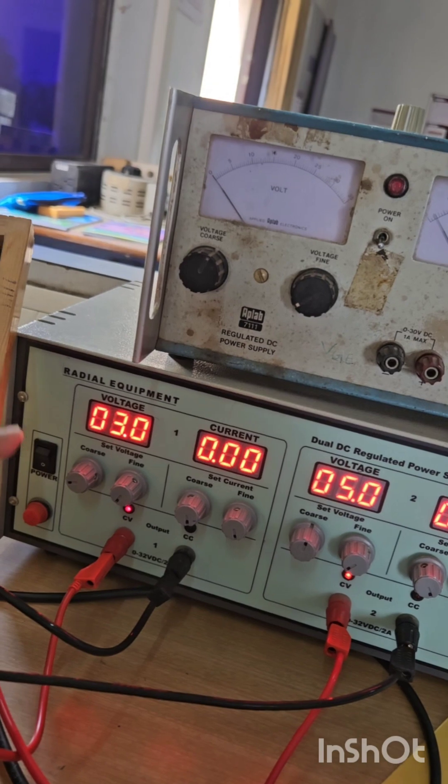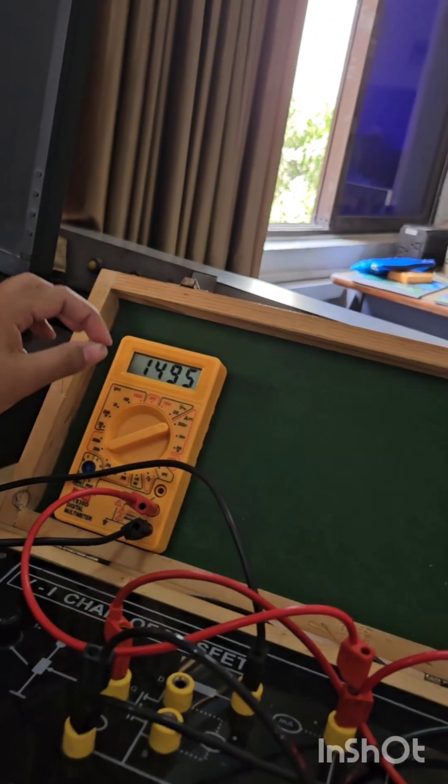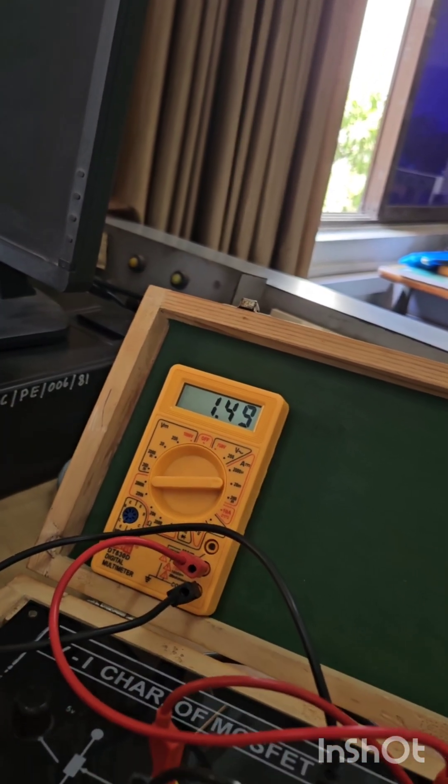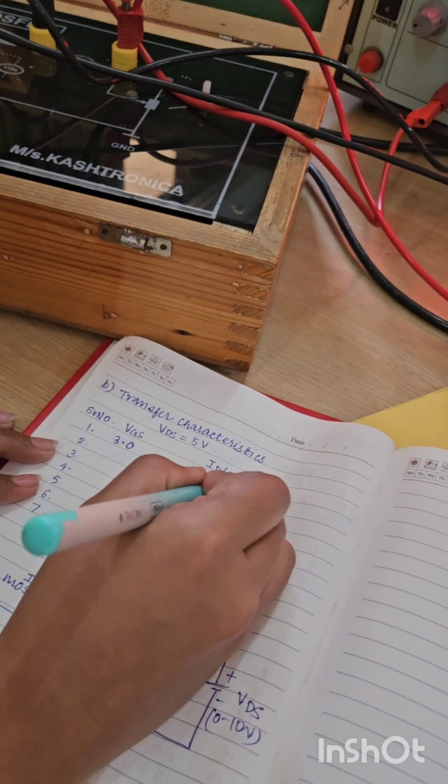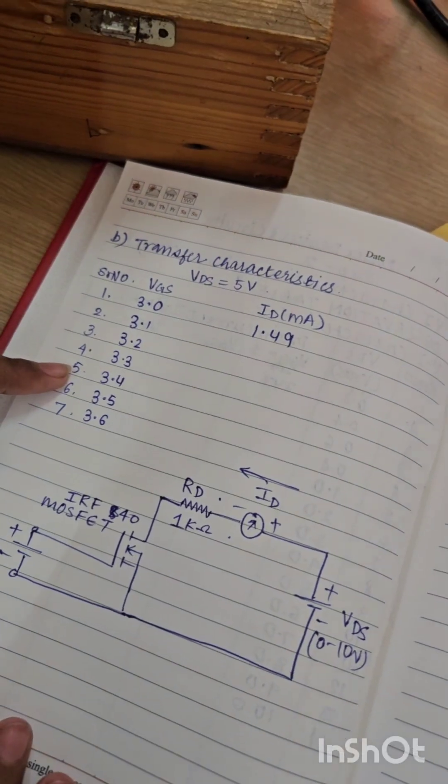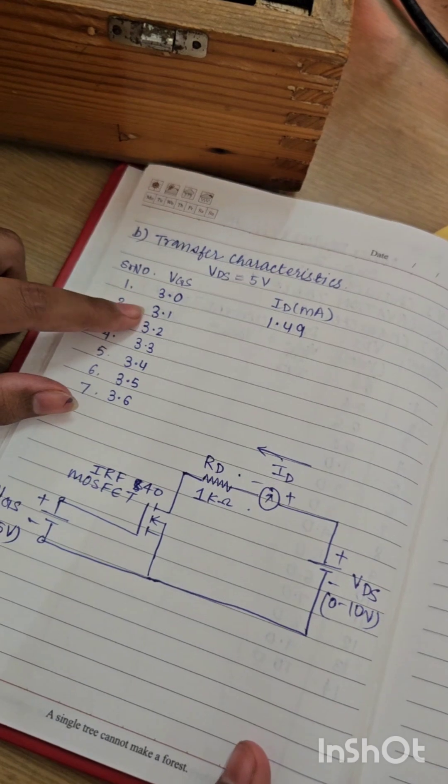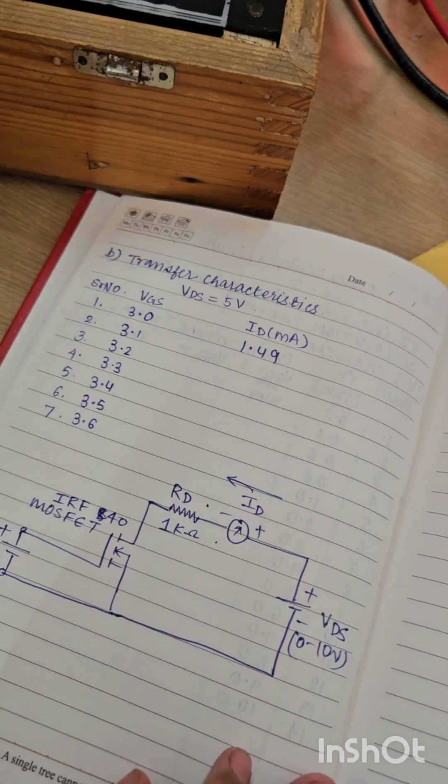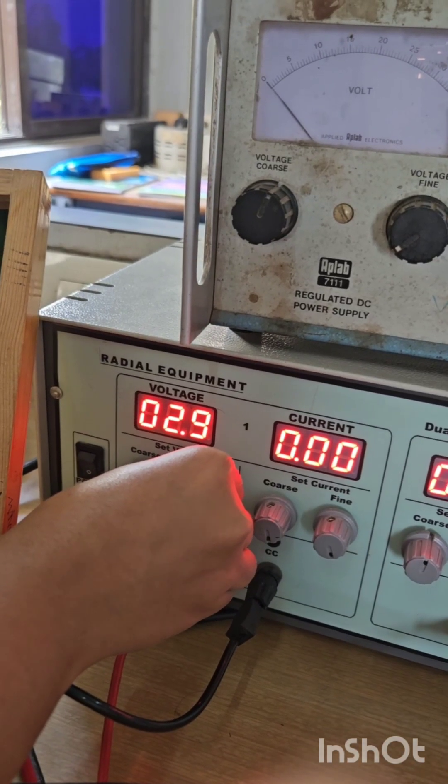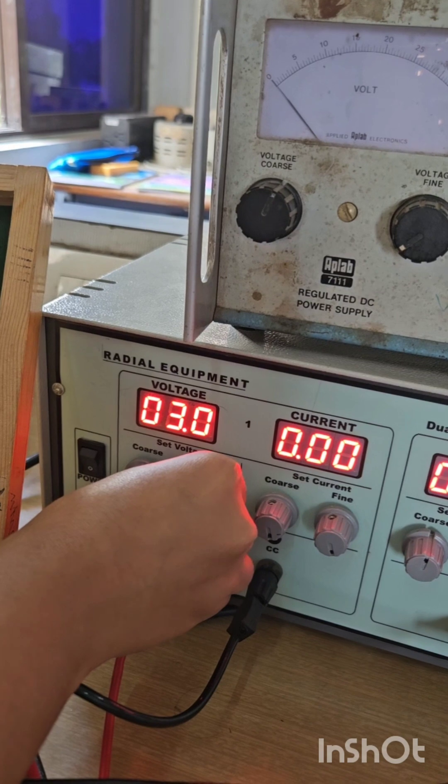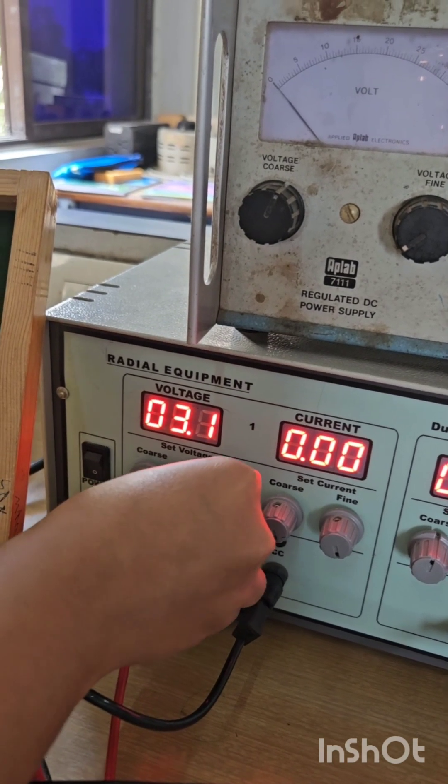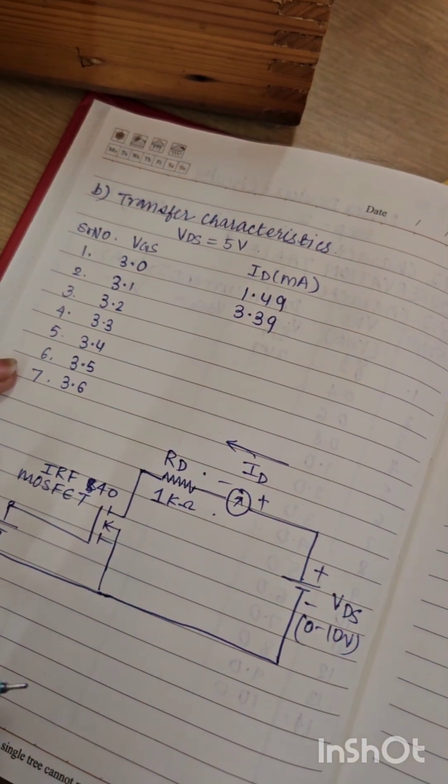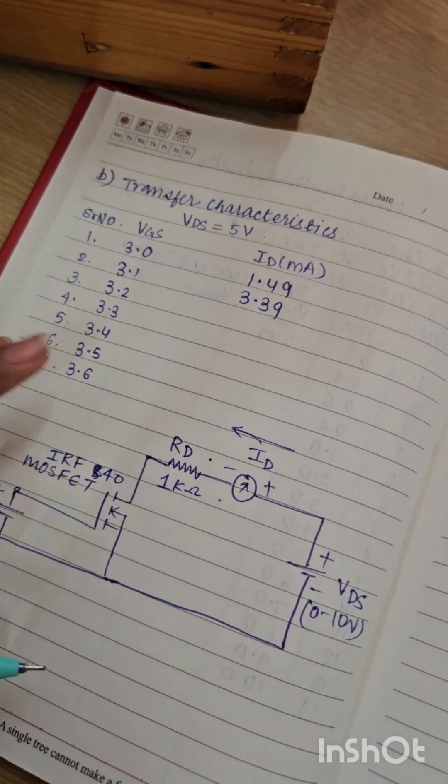For VGS equal to 3 volt, this is the value of ID, and this we have to set at milliampere. So our ID value is 1.49 milliampere. For remaining readings, increase VGS by 0.1 up till 3.6 and note down respective readings of ID. Repeat this process till VGS is equal to 3.6 volt. Thank you.